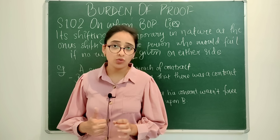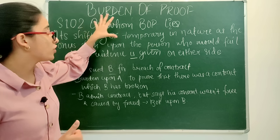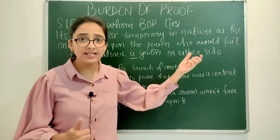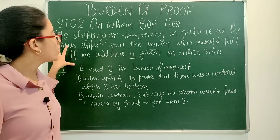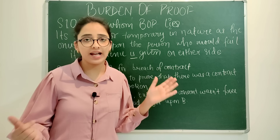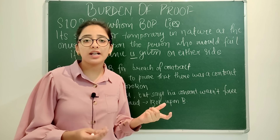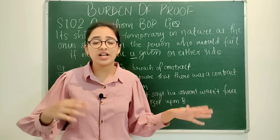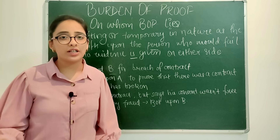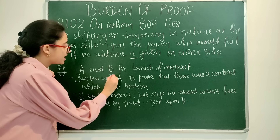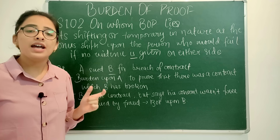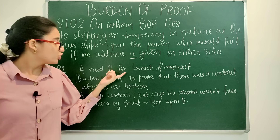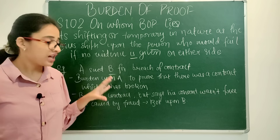We are discussing section 102 — it talks about onus of proof. The onus of proof, or the turn of giving evidence, lies upon that person who would fail if no evidence is given on the other side. For example — A sued B for breach of contract. There was a contract between A and B, and A has now sued B for breach of contract. At the point A brings the case, if no evidence is given, then A will lose the case. Therefore, the initial onus is upon A.